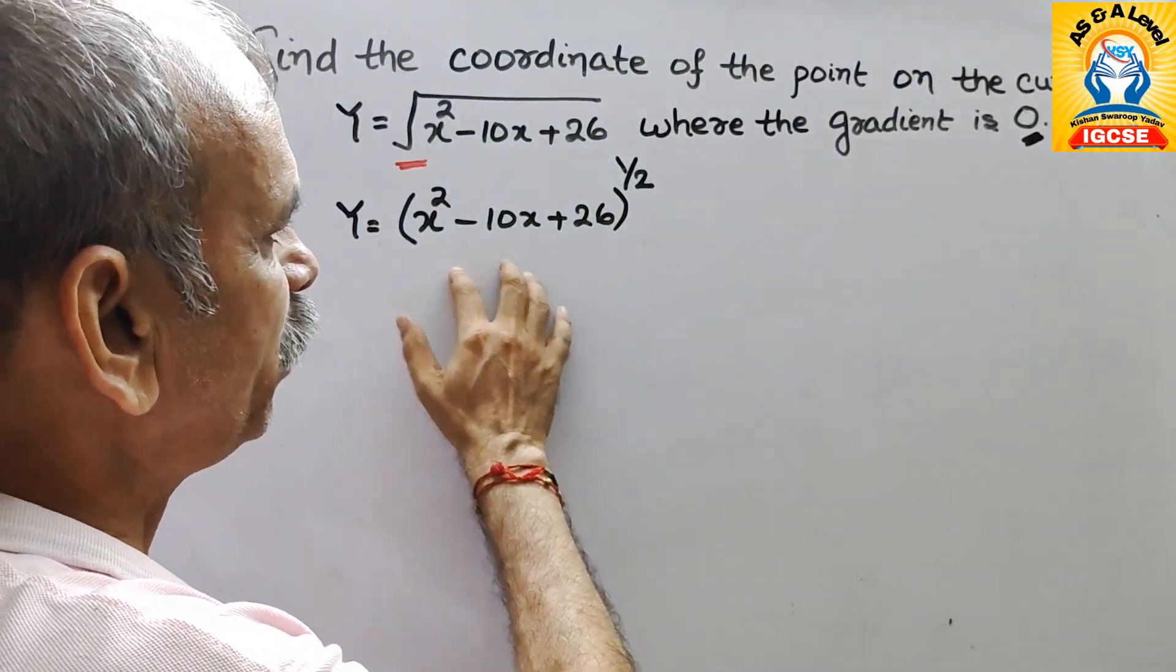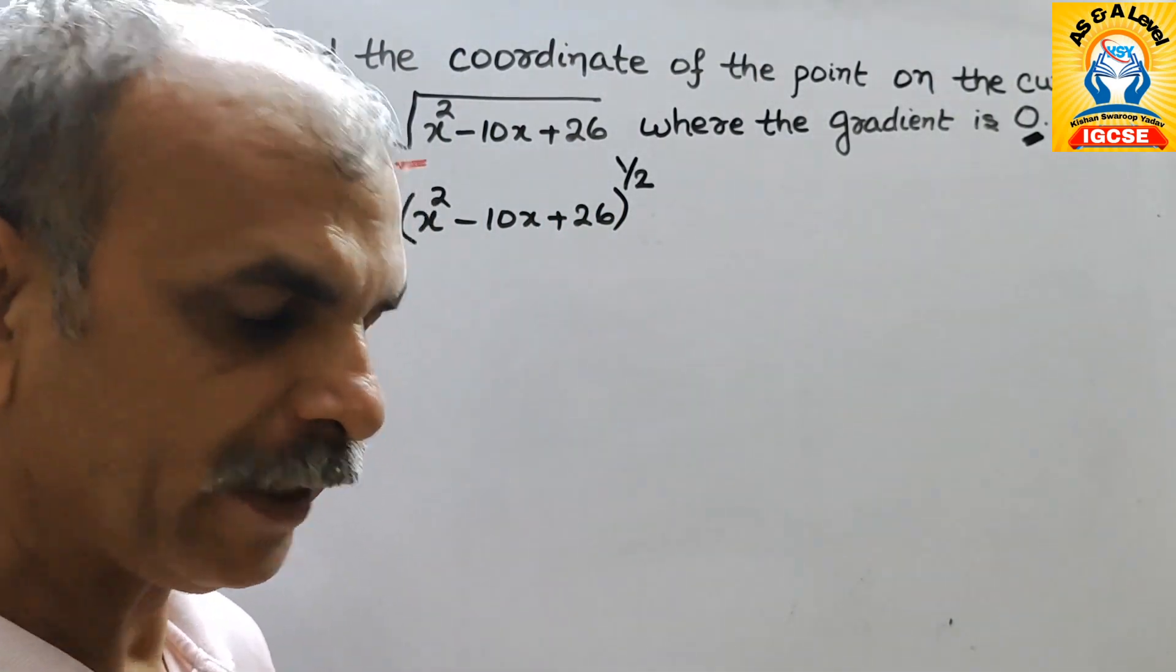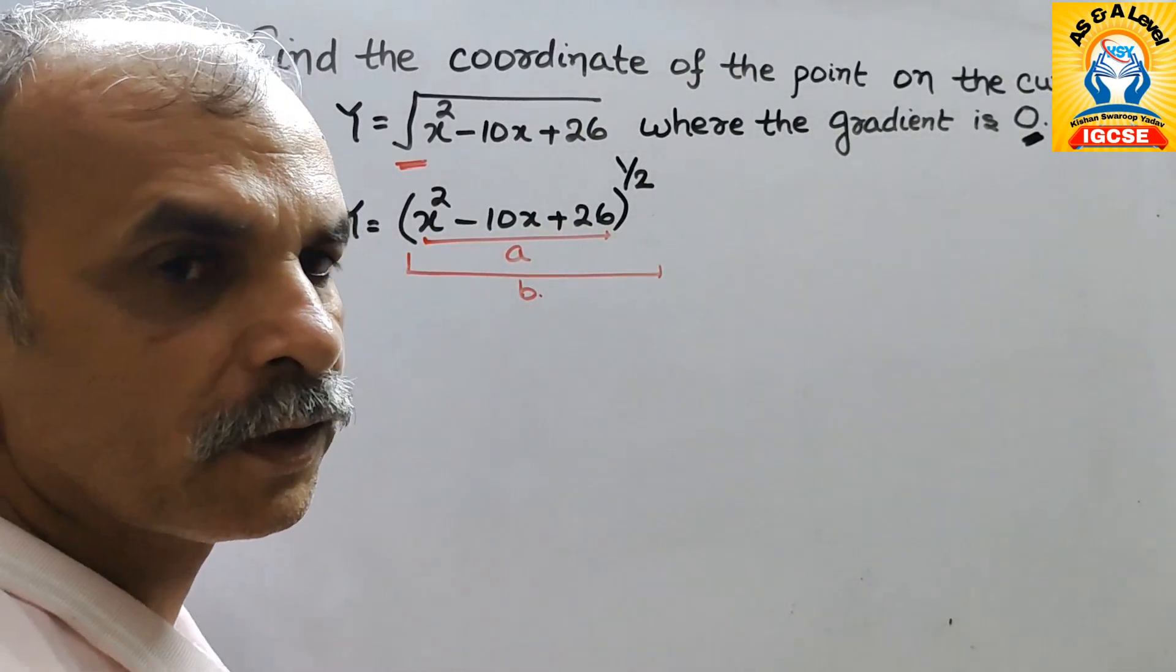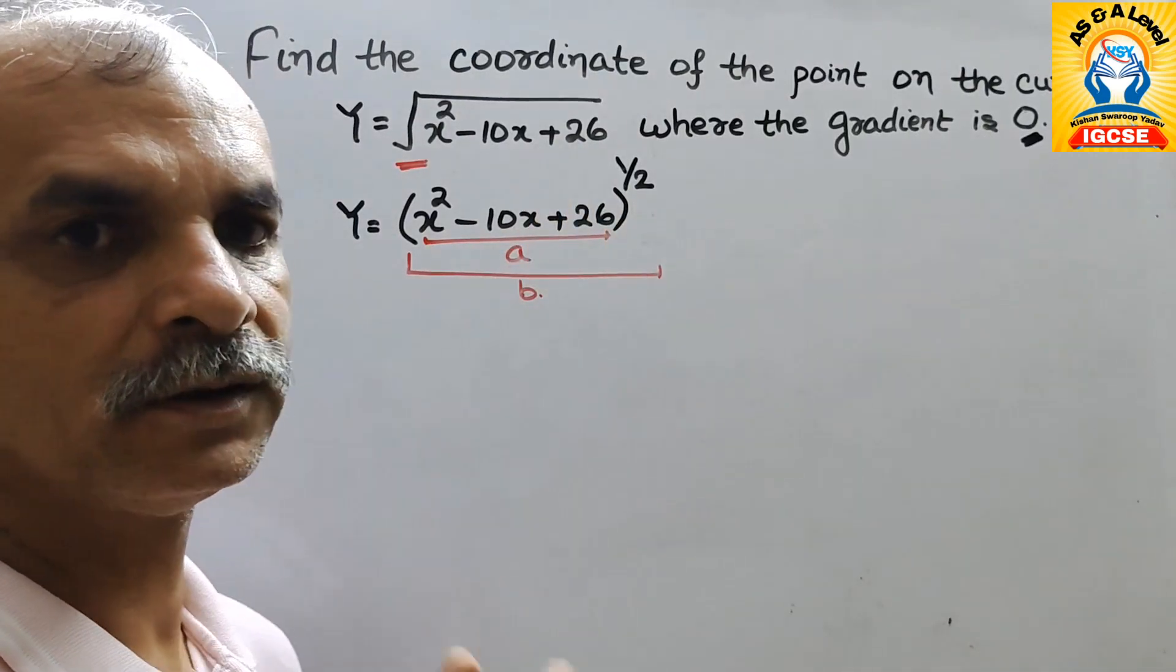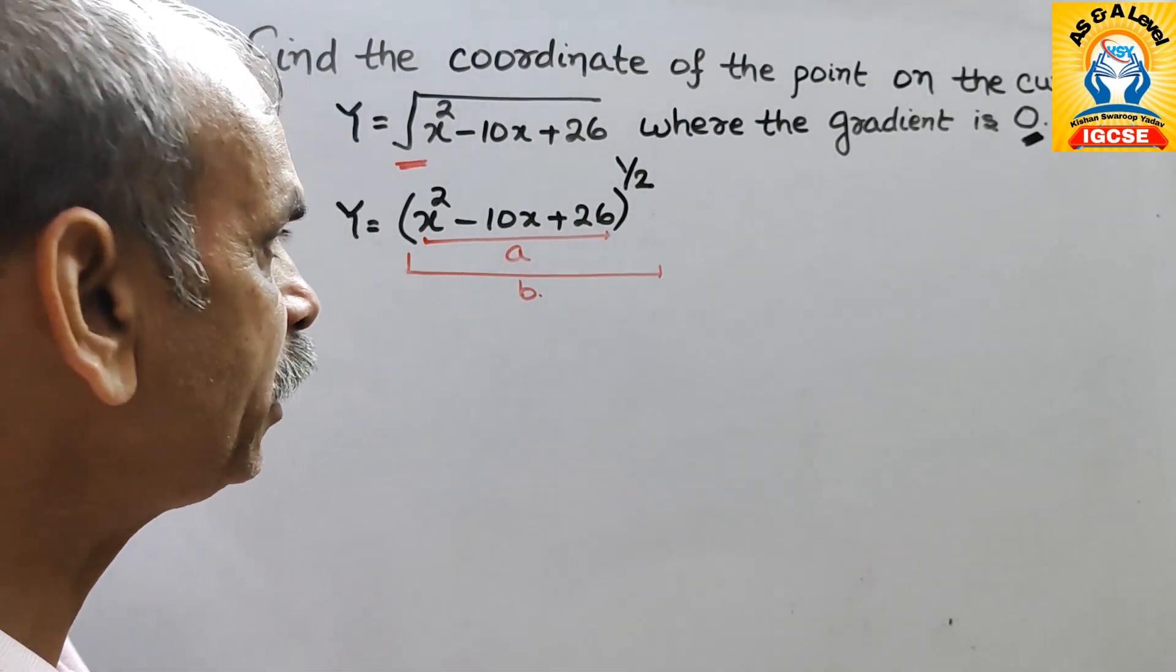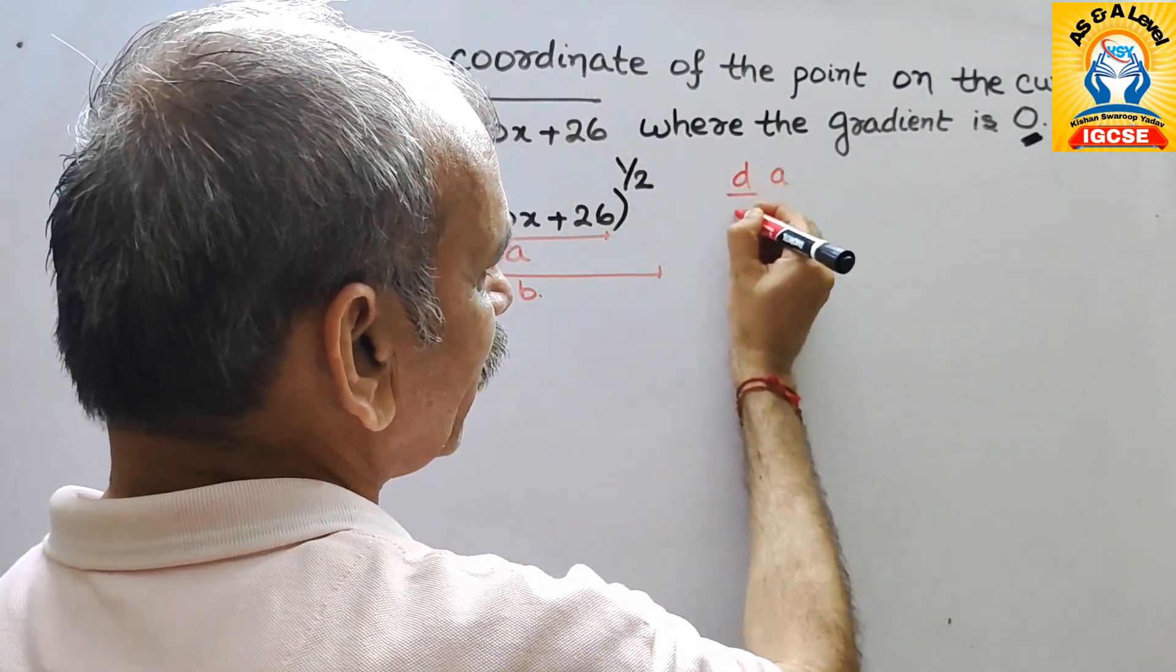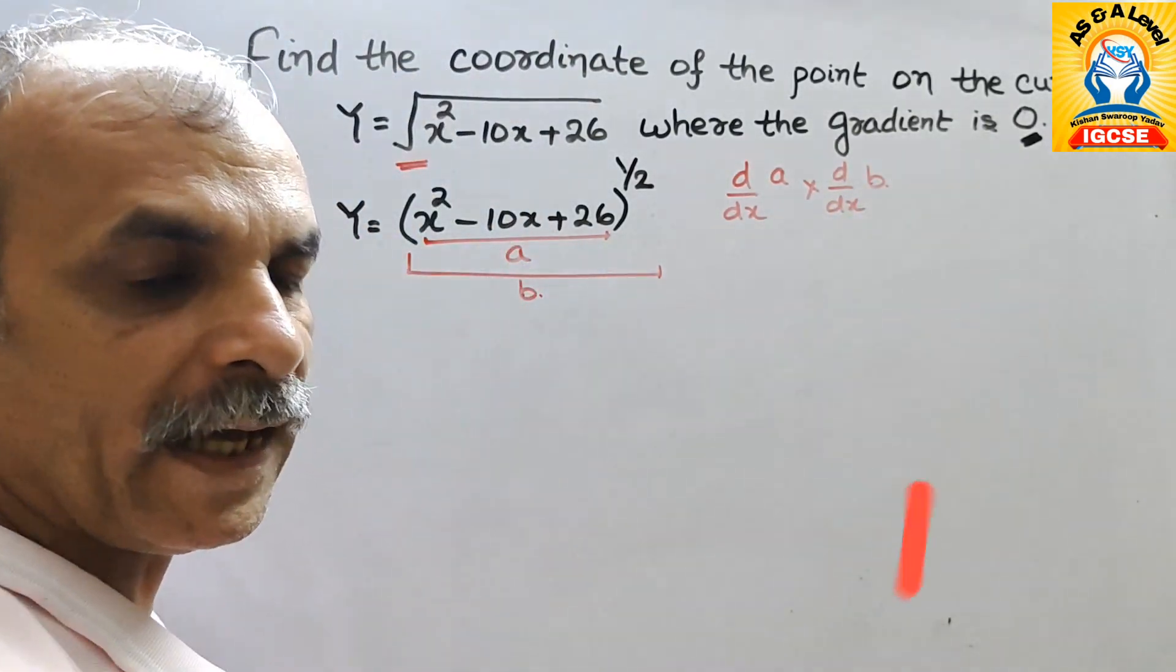So therefore just we will differentiate this. How? By chain rule. That means first we will take this. This is your a and the bracket and the power is your b. That we have to differentiate. And in a also if you see there are three terms, so we will go for scalar multiple. So now if you differentiate it what we will get da by dx into d by dx of b. So like that we have to do it.